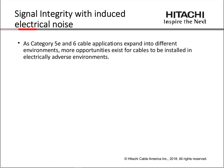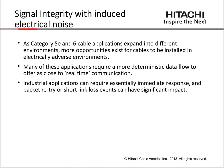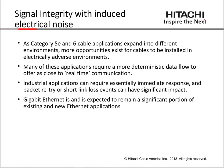CAT 5 and CAT 6 gigabit applications are continuing to expand into different environments, and there are more opportunities for cables to be installed near or within electrically adverse environments. Many of these new applications, particularly industrial, require a reasonably deterministic data flow and rely on essentially real-time communication. Disruptions in the data channel — retries, short link loss — can have a significant impact on channel operation. Gigabit is also expected to remain a significant portion of existing and new Ethernet applications, even as data rates of 2.5, 5, and 10 gigabit continue to grow market share.